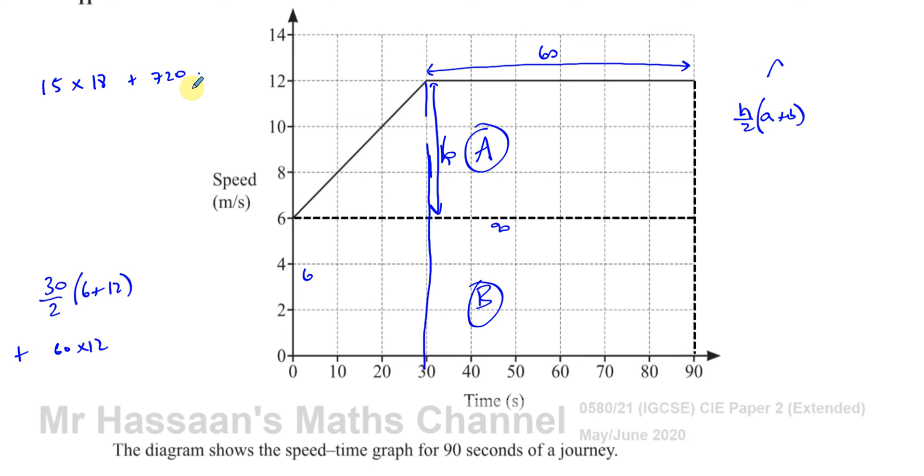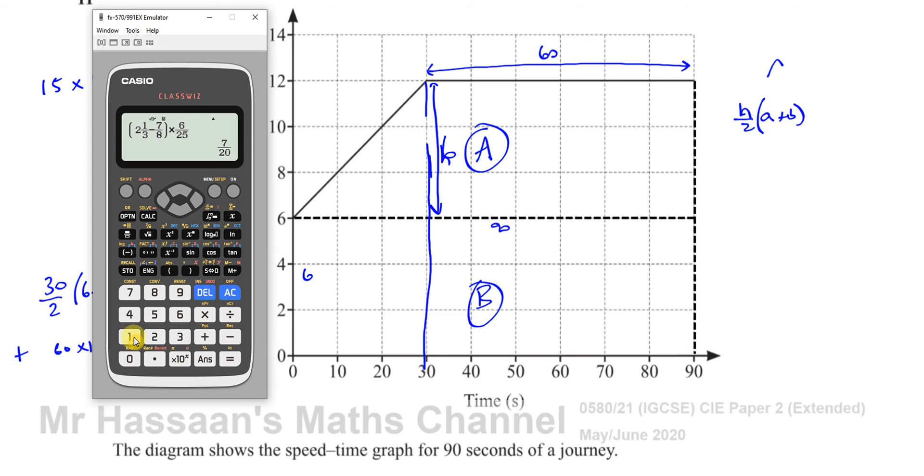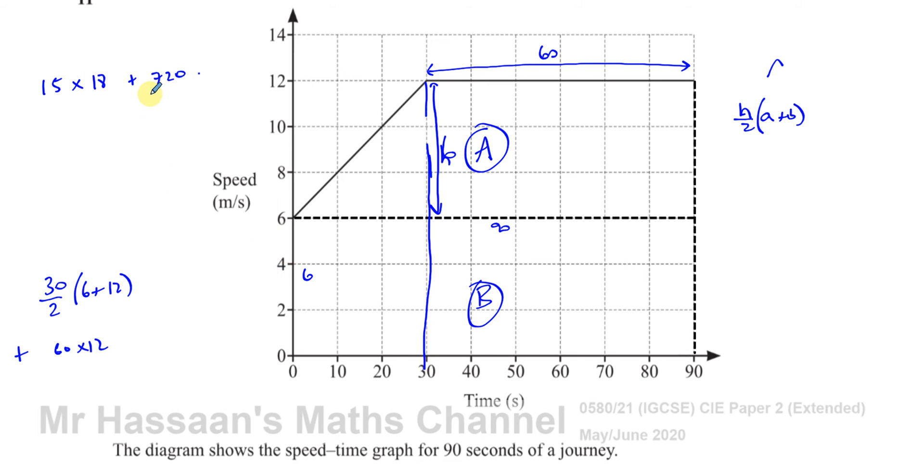15 times 18 plus 60 times 12, which is 720. So 15 times 18, which gives you 270. So you have 270 plus 720, which also gives you 990 meters.